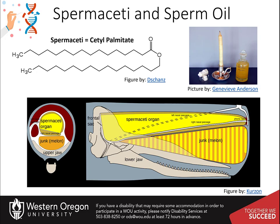Whaling fleets in the 1800s hunted the sperm whale to near extinction. At the height of whaling, nearly 5,000 animals were killed each year. Spermaceti was harvested from the head of the animal and the rest discarded; it was sold largely as lamp fuel.